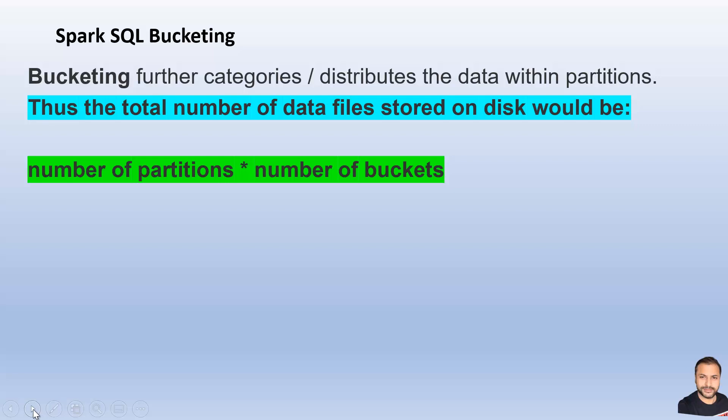This would be handy to understand. If you already have data with partitions and you further add bucketing, say you want to categorize data into four buckets each, the number of eventual files would be 8 cross 4. Obviously additional files like underscore success and underscore commit would be there, but your data files would be n cross m.